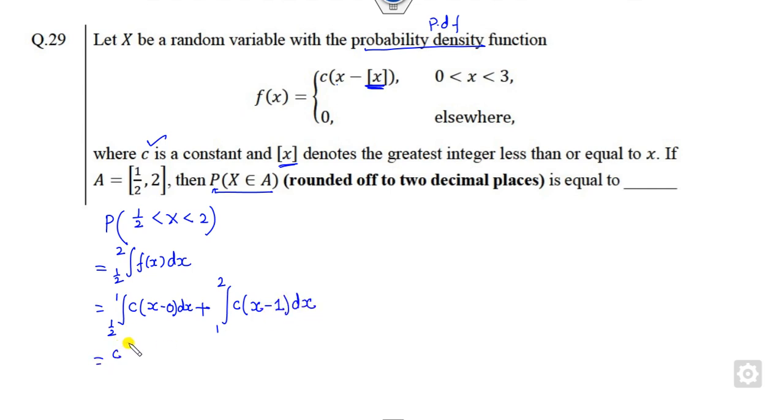So what is that? C is outside, so it will be x square by 2. So it is 1 minus 1 by 4, plus this integration is x minus 1 whole square by 2 from 1 to 2. So when you take 2, it is 1. C is outside, so 1 by 2 minus 0.